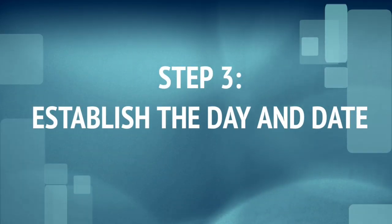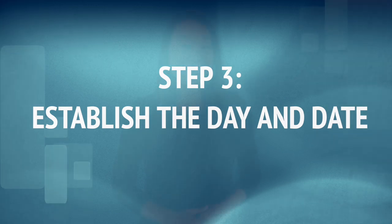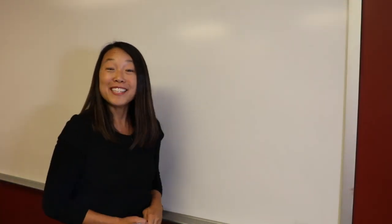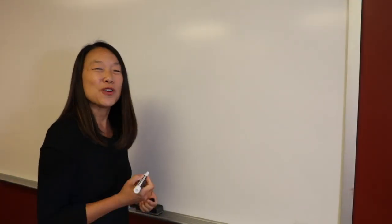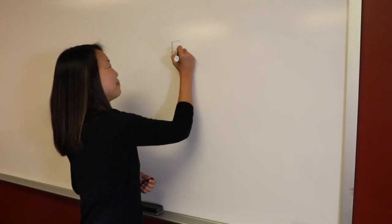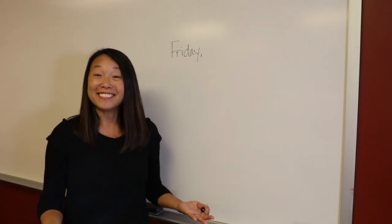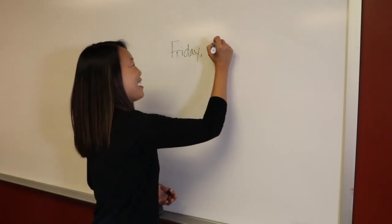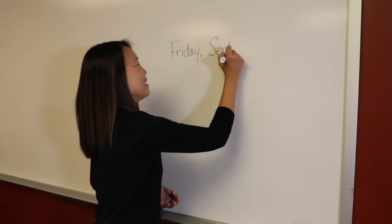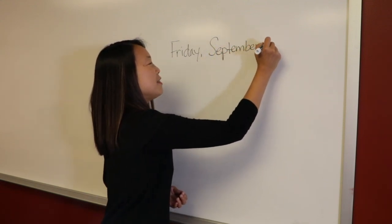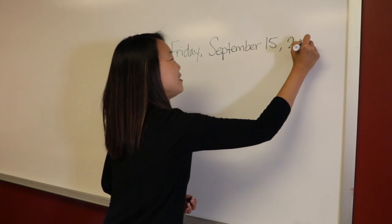Step 3: establish the day and date. Make sure you ask students the day and date every class, and write it on the board as they say it. 'Class, what day is it?' 'Right, it's Friday.' 'What is the date?' 'Right, it is September 15th, 2017.'